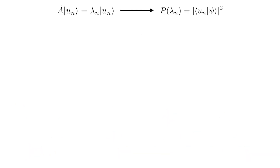So what does it actually mean that we have a probability associated with a given measurement outcome? If we have a system in state ψ and want to measure A, it is in general impossible to predict for that one measurement what we'll get — we have to actually measure A to find out the answer. This is radically different to classical mechanics, where we can predict the outcome of a measurement even before we do it.